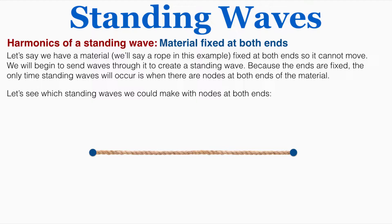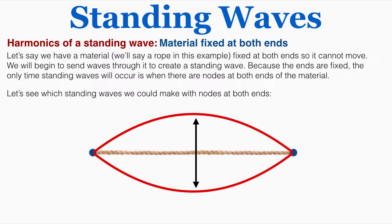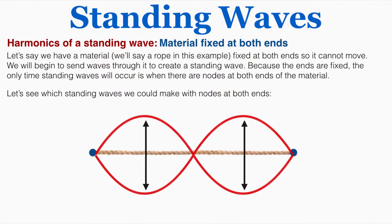So let's observe which standing waves we could make with nodes at both ends of this rope. In the first example, we can imagine this rope oscillating up and down. This pattern has two nodes and one anti-node in the middle. We could also make another pattern — any pattern that has a node at either end would work. This next pattern has three nodes and two anti-nodes.